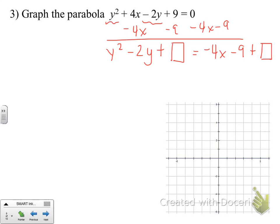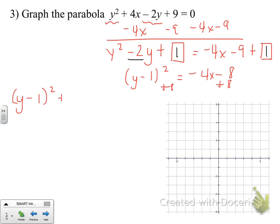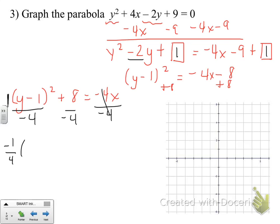We write the trinomial as the square of a binomial: (y minus 1) squared equals negative 4x minus 8. Bringing the minus 8 to the other side: (y minus 1) squared plus 8 equals negative 4x. Now I isolate x by dividing each term by negative 4. The 1 in front of the parentheses divided by negative 4 becomes negative one-fourth. That's our a value. The equation becomes x equals negative one-fourth times (y minus 1) squared minus 2.